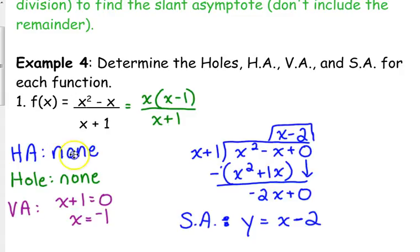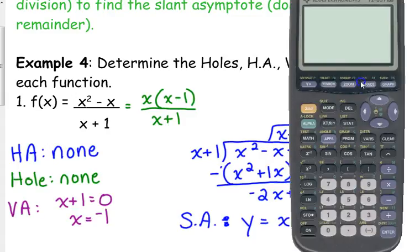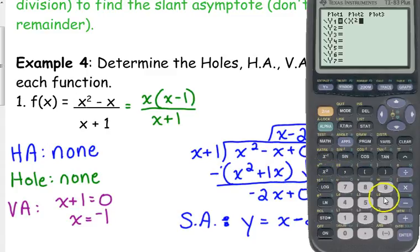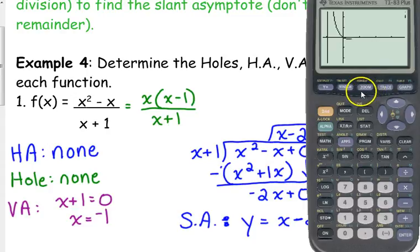Now, let me show you how you can check this. We looked at some of the graphs yesterday, so I'm going to graph this. x squared minus x over x plus 1. So I'm just going to start. Let me fix my window here. Here is our rational function.